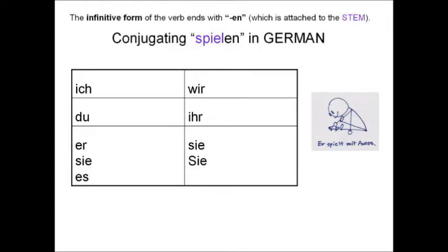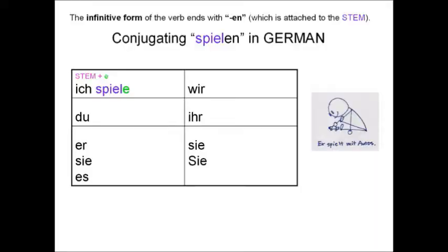For the ich form, you will take the stem and add an E. So for the verb spielen, it would be spiele. Sometimes when I'm teaching my students this, I say for the ich form, drop the N and then we're at the same place — spiele.